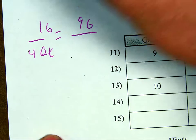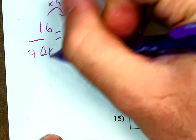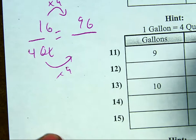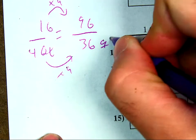what I'm basically doing is multiplying times 9. So I have to do times 9 on top and the bottom. 4 times 9 will be 36 quarts.